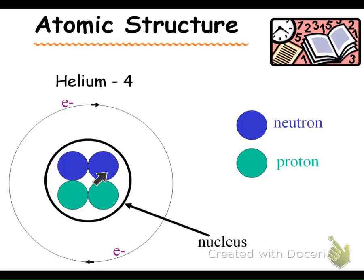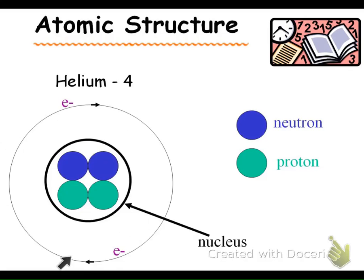In the nucleus we know that we have protons and neutrons — our protons here are depicted as the green, our neutrons here are depicted as the blue. Also in this structure we have our electrons orbiting the nucleus. Within our nucleus, our protons and our neutrons help make up our mass number.